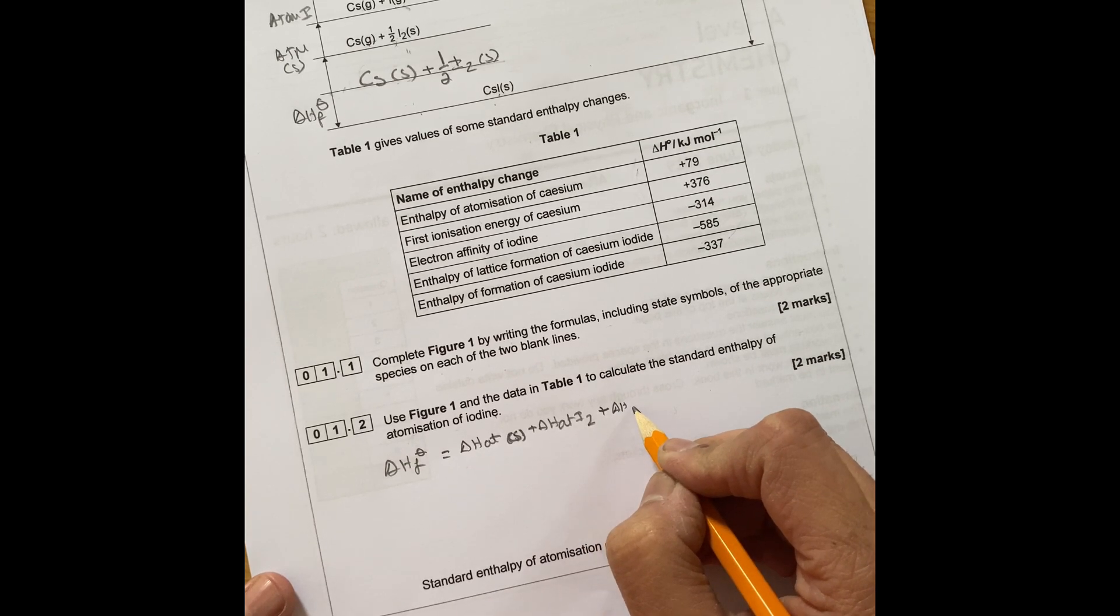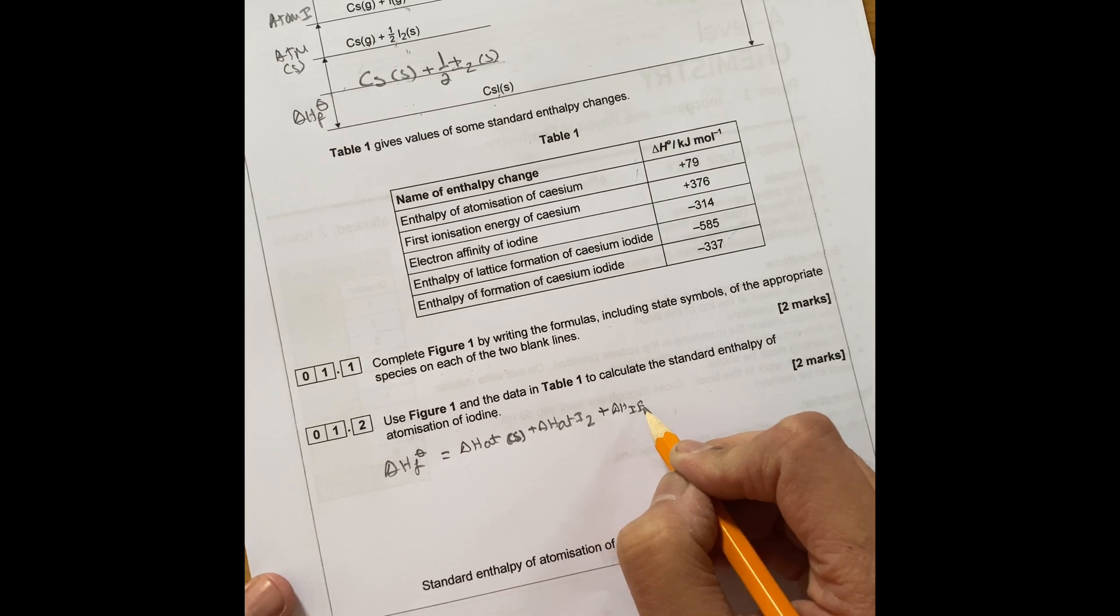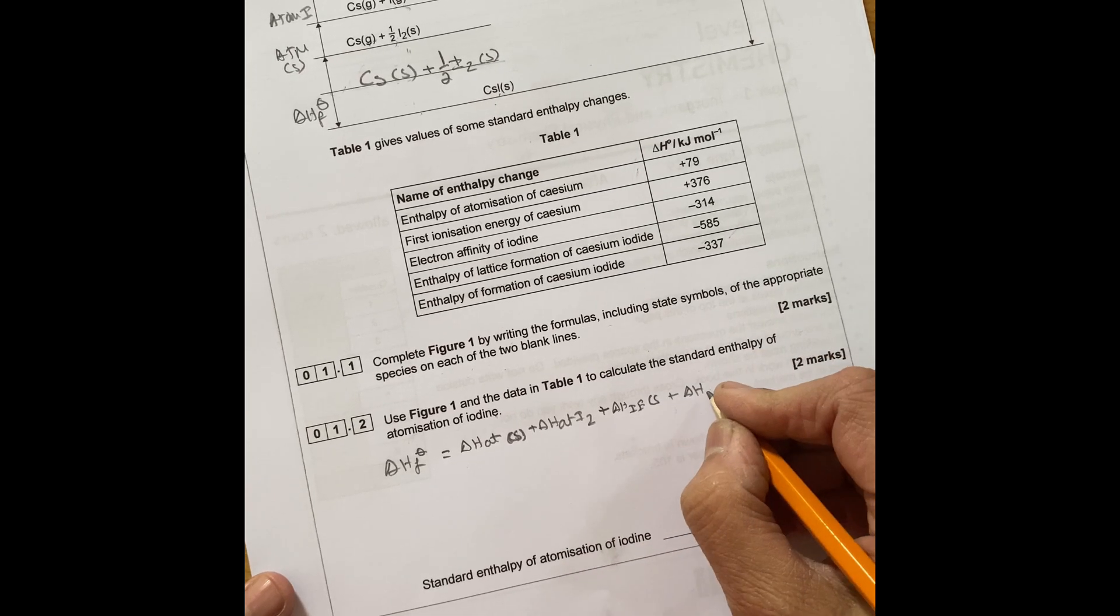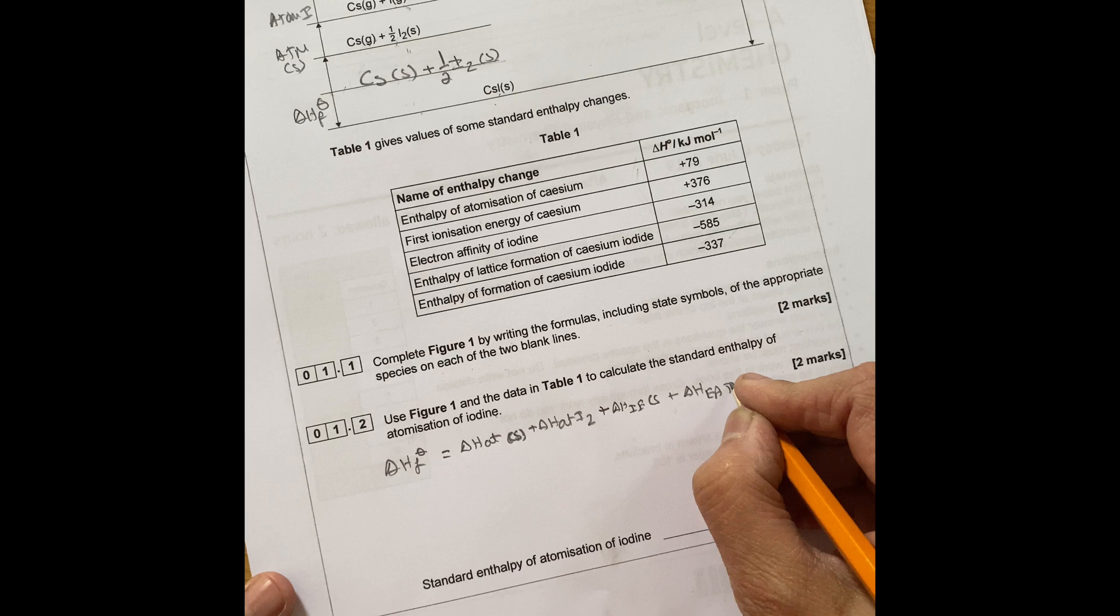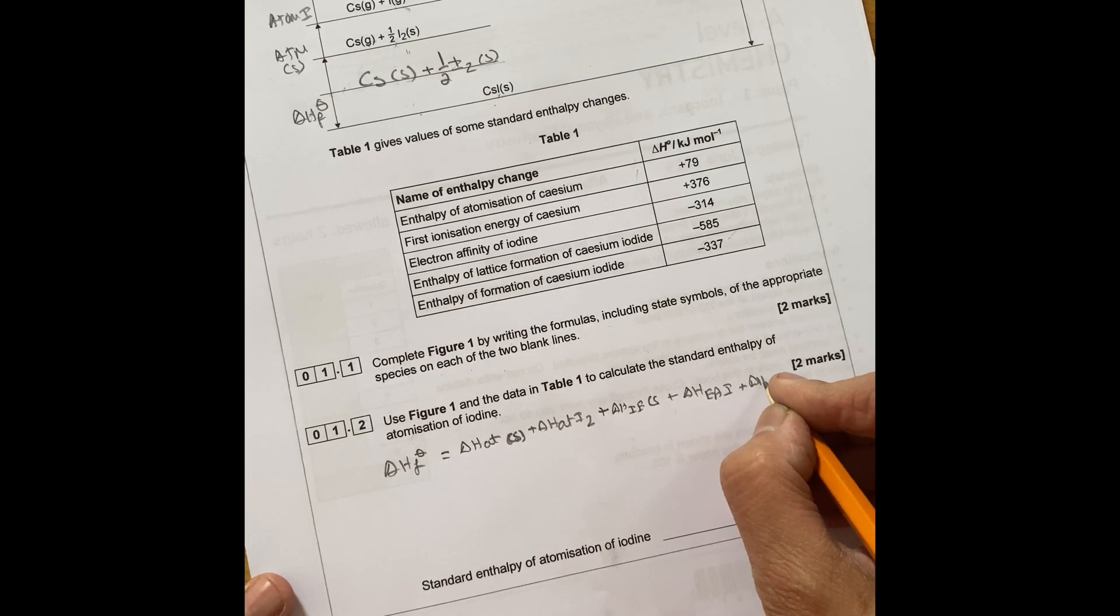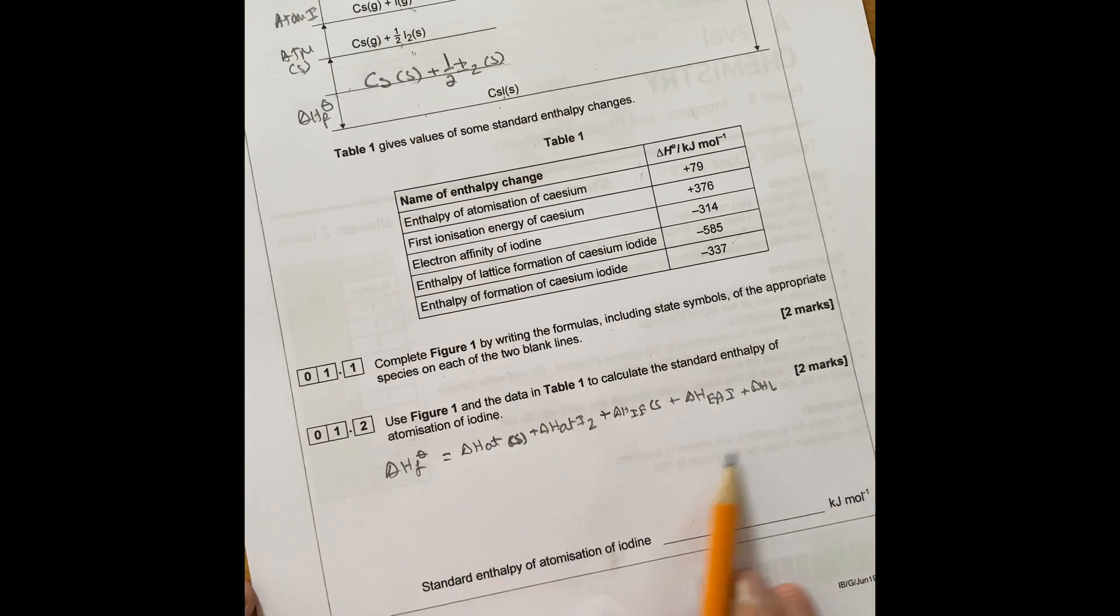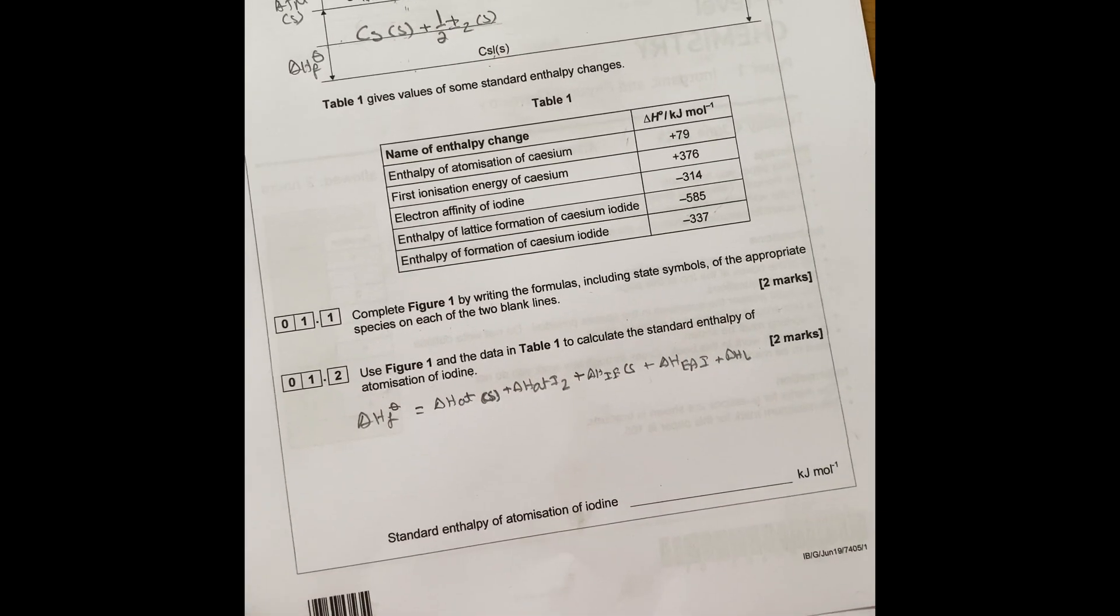So always start with delta H formation. Delta H formation equals to delta H atomization of cesium plus delta H atomization of iodine plus delta H first ionization energy of cesium plus delta H electron affinity of iodine plus delta H lattice enthalpy.